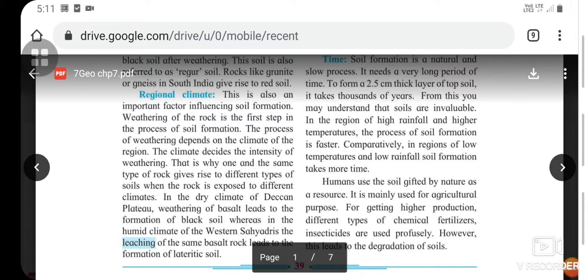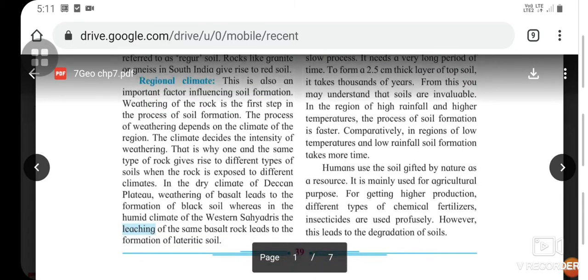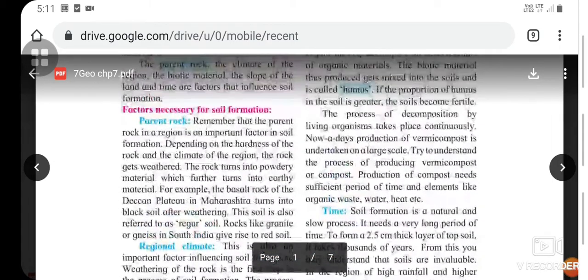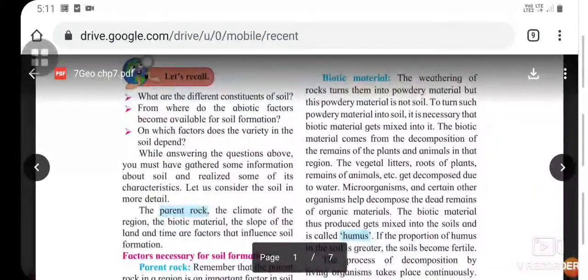In the dry climate of Deccan plateau, weathering of basalt leads to the formation of black soil, whereas in the humid climate of Western Sahyadris, the leaching of the same basalt rock leads to the formation of lateritic soil.